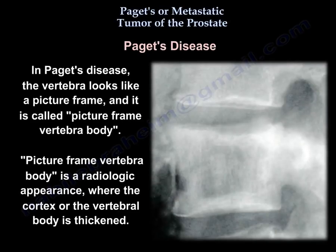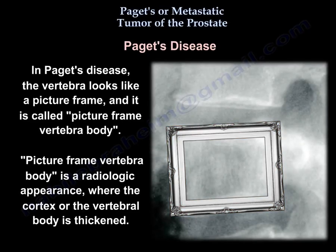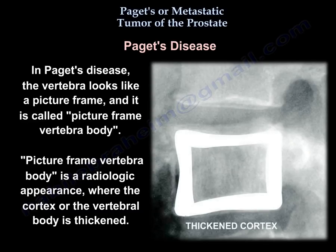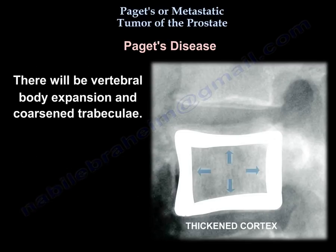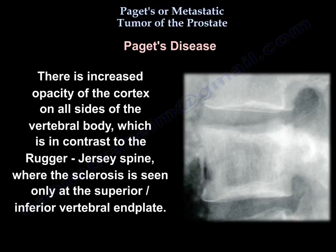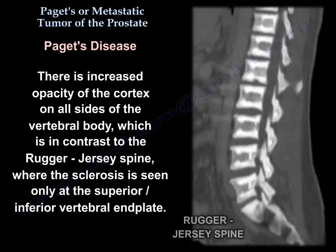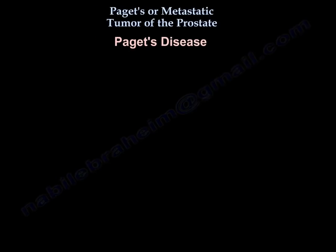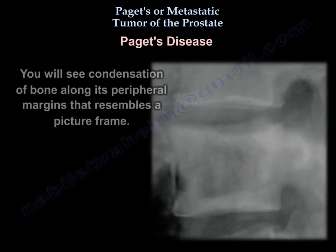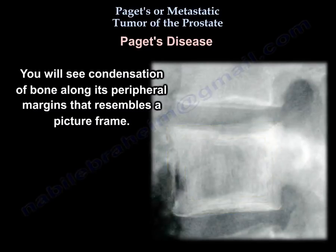In Paget's disease, the vertebra looks like a picture frame and it is called the picture frame vertebral body. This is a radiologic appearance where the cortex of the vertebral body is thickened. There will be vertebral body expansion and coarsened trabeculae. There is increased opacity of the cortex on all sides of the vertebral body, which is in contrast to the Rugger-Jersey spine where the sclerosis is seen only at the superior and inferior vertebral end plates. There will be disorganized new cortical bone formation after excessive osteoclastic activity that causes resorption of the normal bone, and you will see condensation of bone along its peripheral margins that resembles a picture frame.